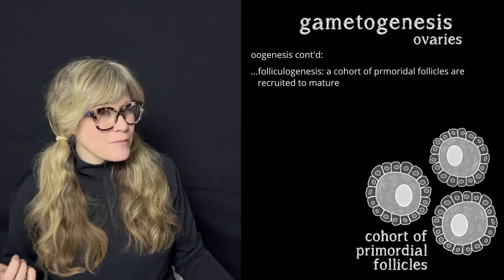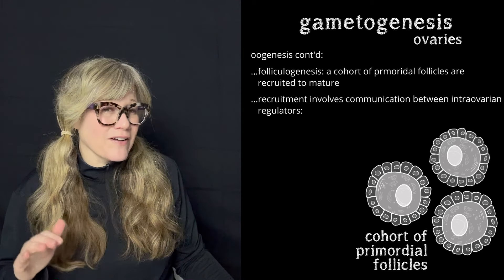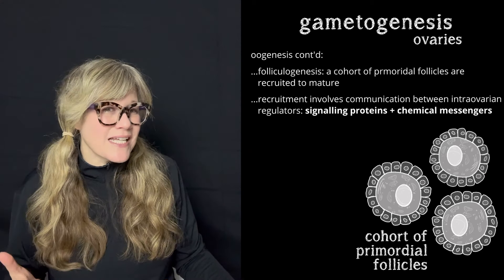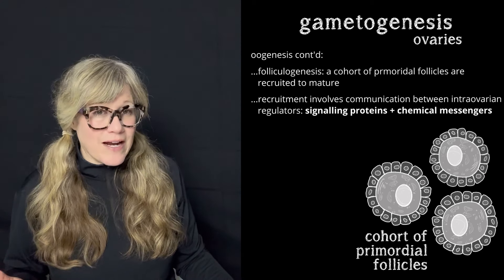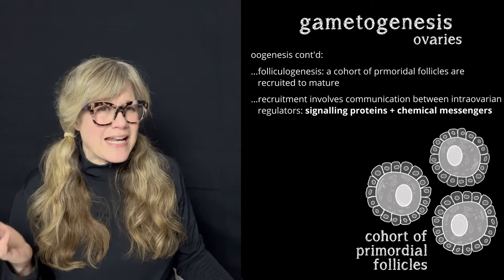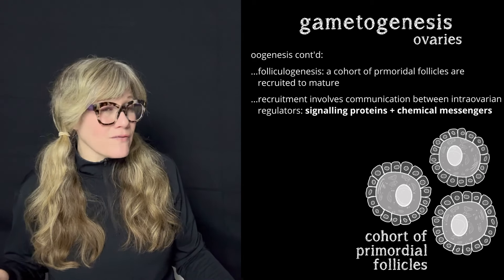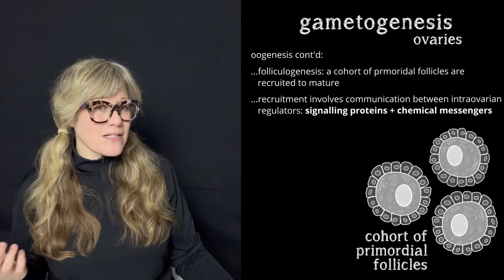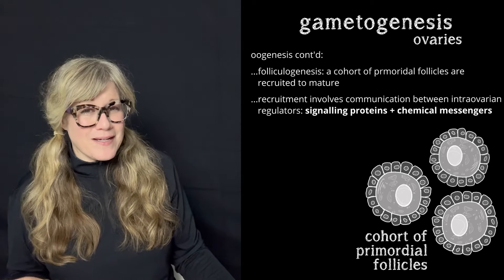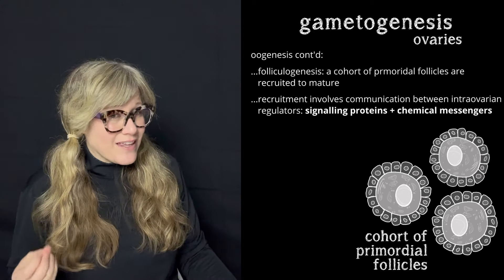What we know from animal models is that recruitment involves a lot of crosstalk between intra-ovarian regulators. Intra-ovarian regulators are signaling proteins and chemical messengers such as growth factors, cytokines, and even neuropeptides that are both generated and expressed within the ovary. Neuropeptides are usually found in abundance in the nervous system, so it's a little curious that they are also produced and expressed inside the ovary. However, there is evidence that at least one group of neuropeptides may have a significant role in folliculogenesis, and it is initiated within the ovary.